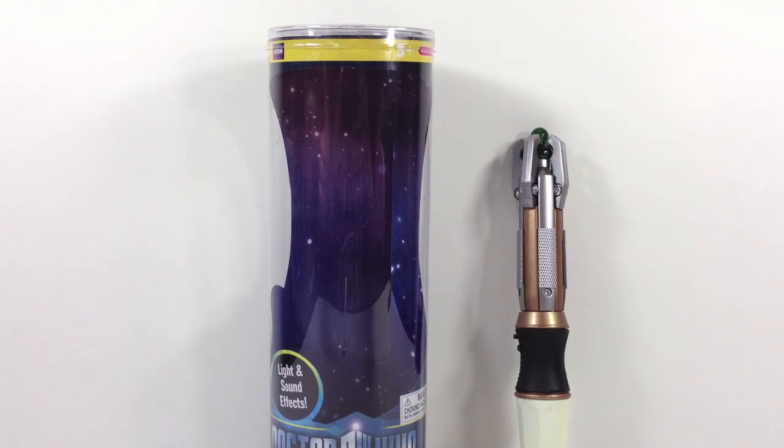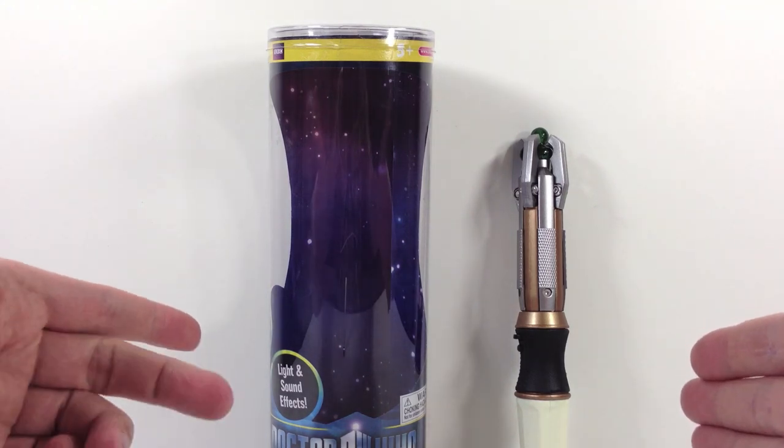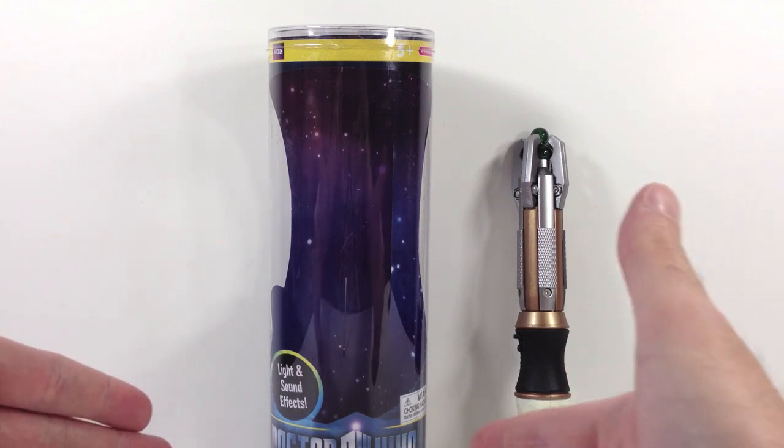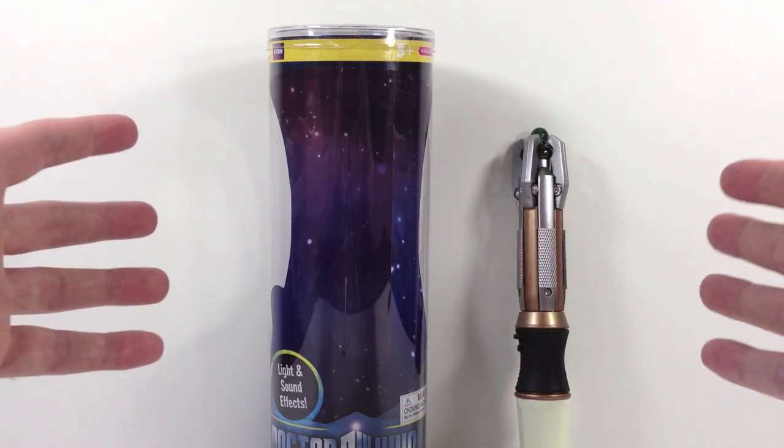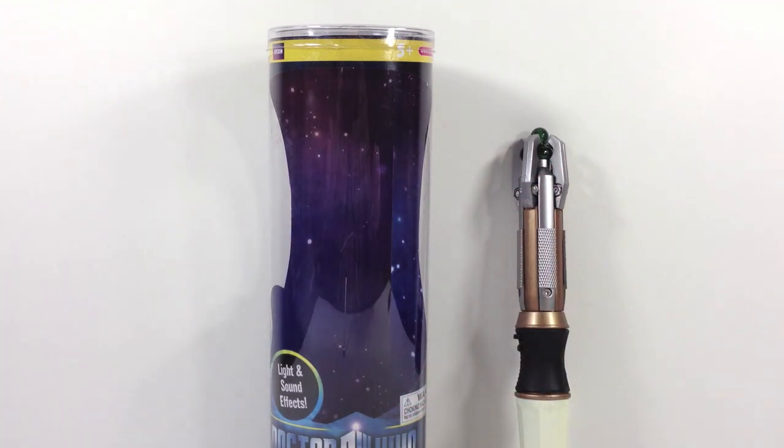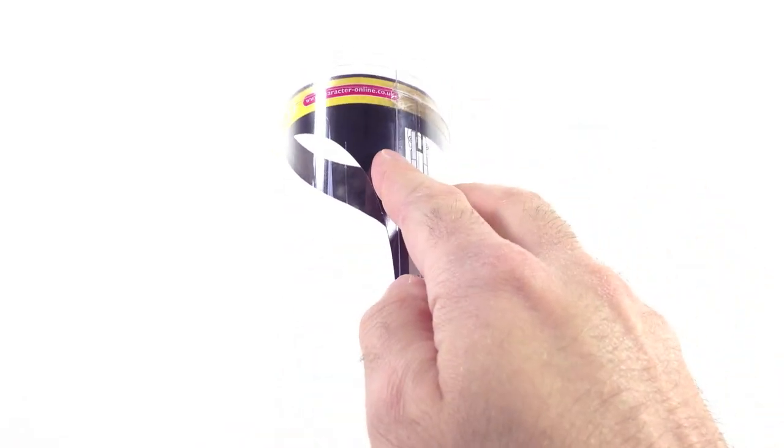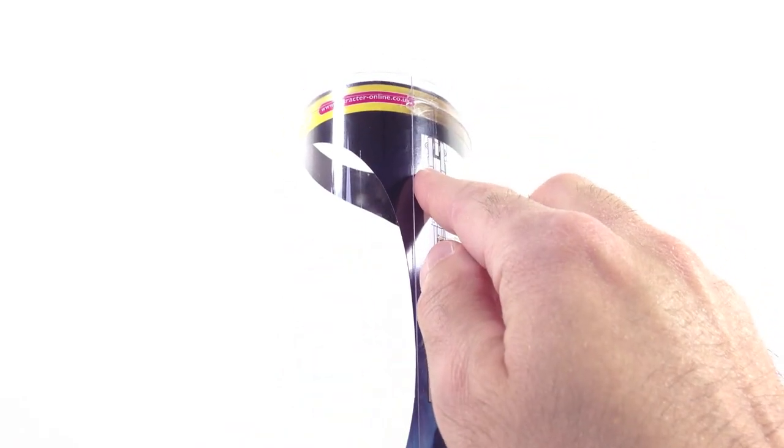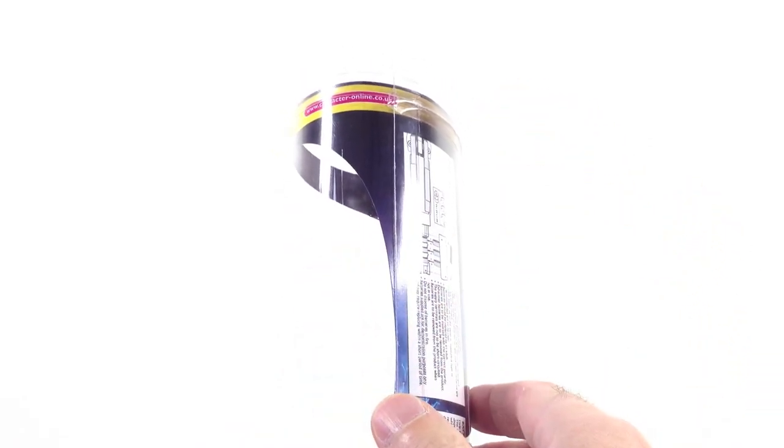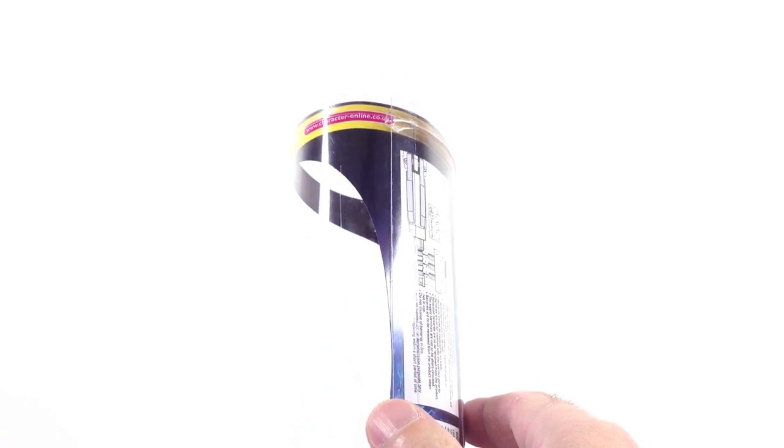But let's talk about why we're here. This is the light and sound effects Doctor Who, the 11th Doctor's sonic screwdriver. Very excited about this. Let's start this review by taking a quick look at the box. On the top, you've got a little BBC symbol. Age is 5+. They want you to go to character-online.co.uk.